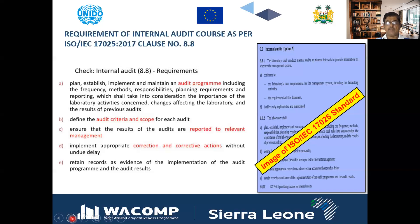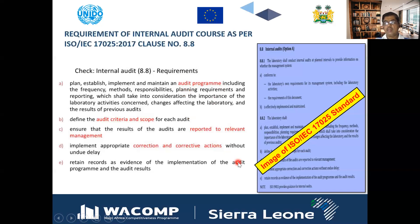Internal audit is a requirement of ISO 17025, clause number 8.8. Here you can see that there should be an audit program, and this should be the internal audit program. There should be a plan, establish, implement, and maintain an internal audit program. Its frequency should be defined, its criteria should be defined, and in the case of ISO 17025, the criteria is ISO 17025.